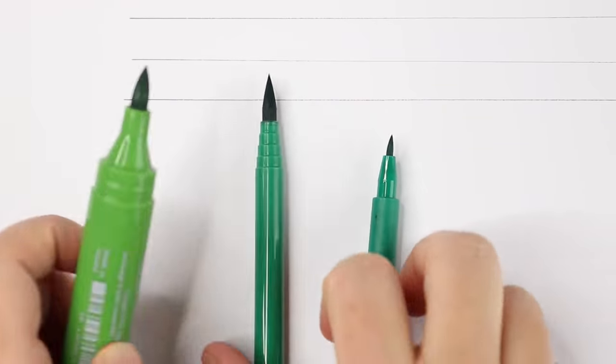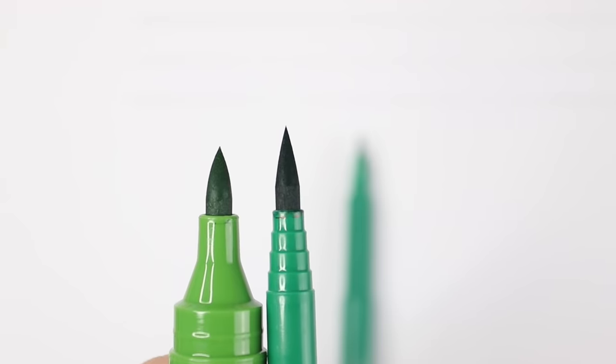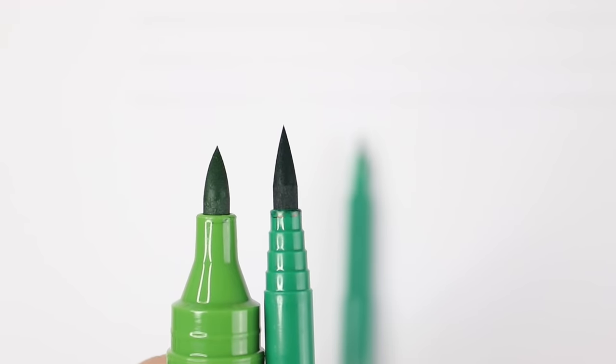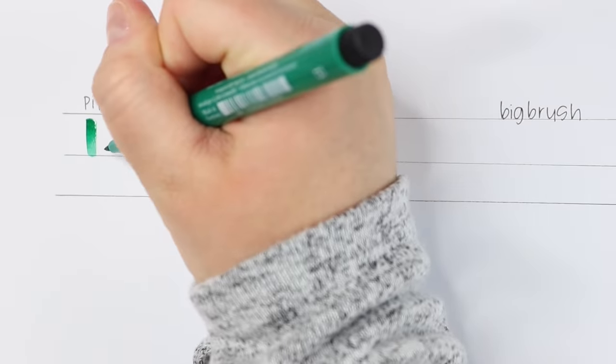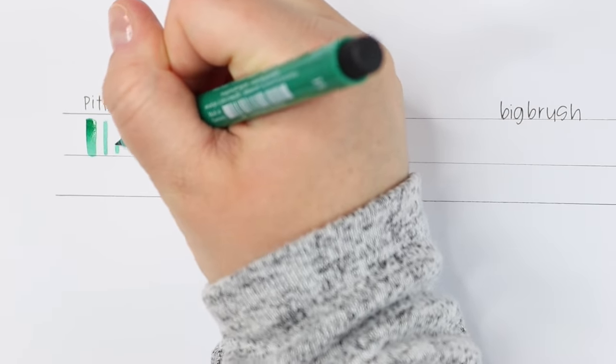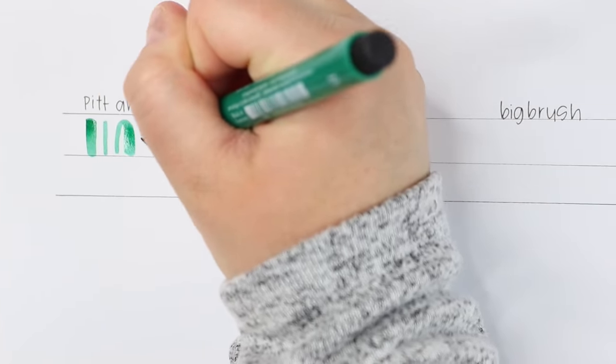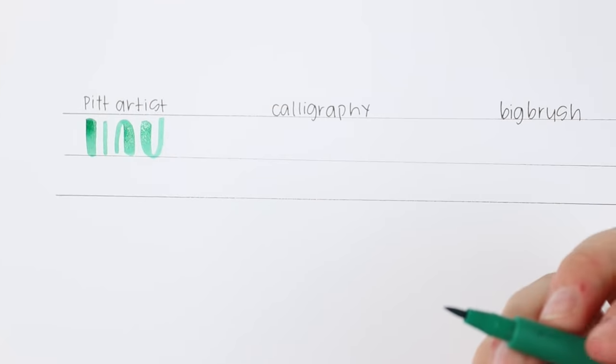So oddly enough when you look at the brush tips, the calligraphy brush pen is actually longer than the big brush pen. I don't find the big brush pen to be super flexible so I think that the skinnier and longer tip of the calligraphy brush pen might just be what makes it so flexible. But I'm going to test out these three using some basic strokes and a bit of lettering so you can see a side-by-side comparison.